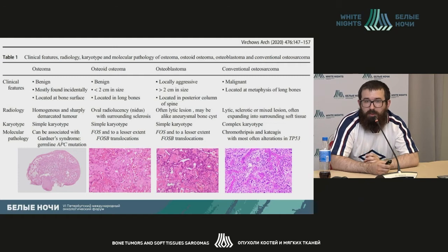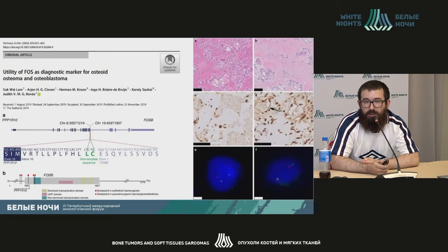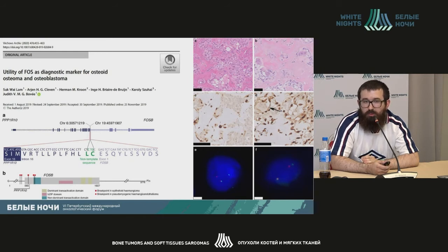A huge amount of data has also appeared regarding osteoid-producing tumors. Osteoma has a specific germline APC mutation, and osteoblastoma has specific mutations in the FOS gene group, which can potentially be diagnosed with immunohistochemistry and fluorescent in situ hybridization. Here you can see on the left osteoid osteoma and on the right osteoblastoma, showing diffuse nuclear staining with the FOS antibody.